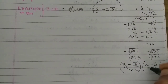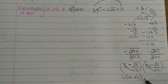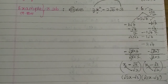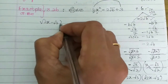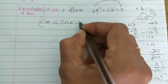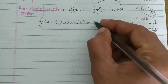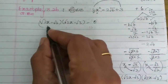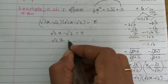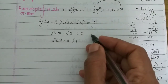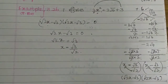Then x minus root 3 by root 2. Let's get the root 2 — we can cancel this 2. So root 2x minus root 3 into root 2x minus root 3. So you can do root 2x minus root 3 into root 2x minus root 3, which is equal to 0. Let's get the value of root 2x. If root 2x minus root 3 equals 0, then root 2x equals root 3, so x equals root 3 by root 2. So this is the answer.